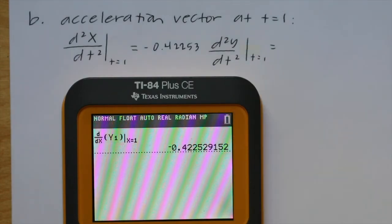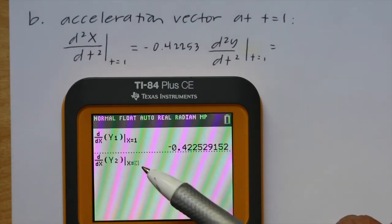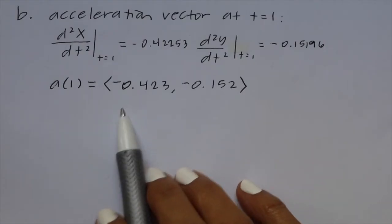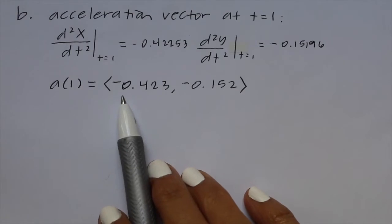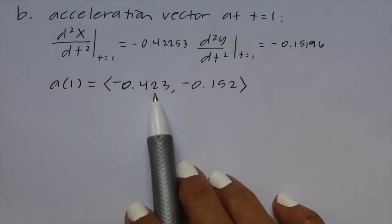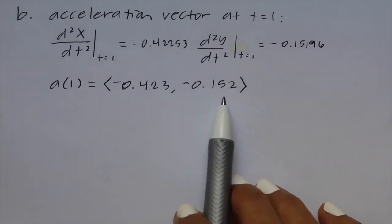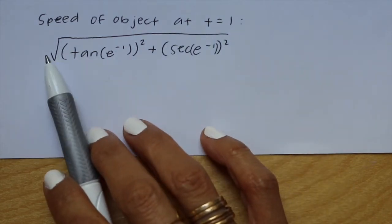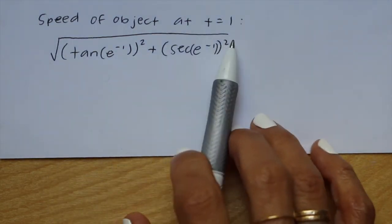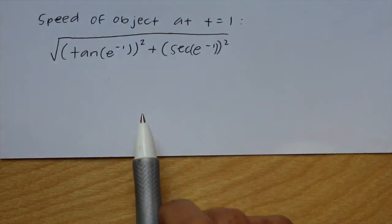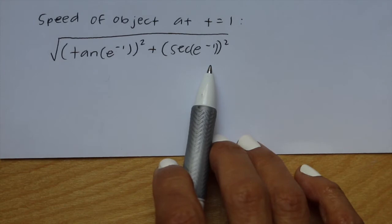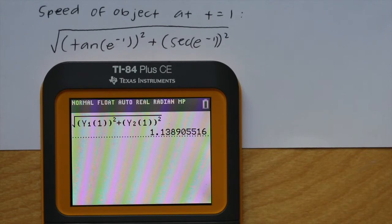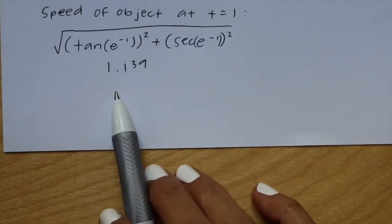We do the same for y2 using math 8, evaluating at x equals 1, getting negative 0.15196. So the acceleration vector at t equals 1 is ⟨−0.423, −0.152⟩. For the speed at t equals 1, we use the formula: square root of (dx/dt)² + (dy/dt)², plugging in t equals 1 and being careful with parentheses, giving a speed of 1.139.